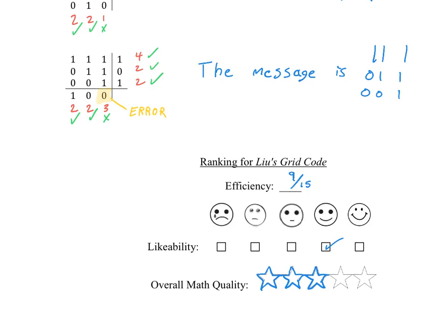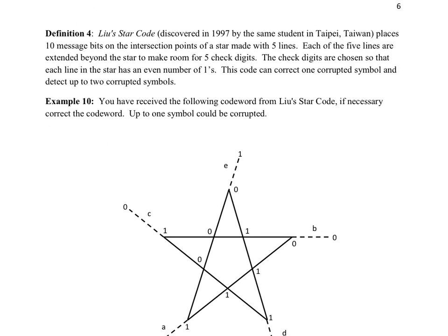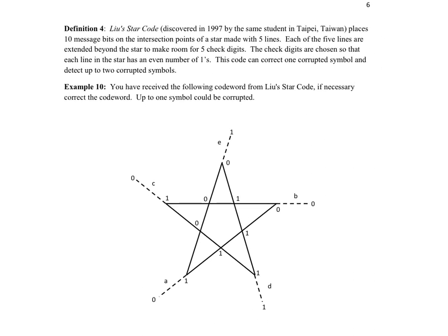There's one more improvement we're going to talk about to build us up towards the Hamming code, and that is Lue's star code. This one is quite similar — we again use the geometric shape idea, but in this case we use a star. What's going to happen with the star is there are more intersection points within your star. When I saw this one, it really helped me understand how to solve Baskerhound's problem and where the Hamming code might be coming from. We draw a star on our page, and then on each intersection in the star you send a message bit — a one or a zero. Then you extend the line of each part of the star to have an extra check digit to make sure that that line has an even amount of ones.